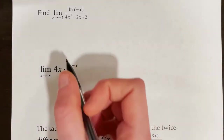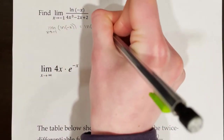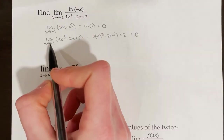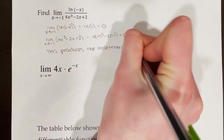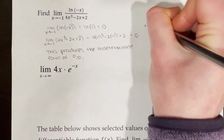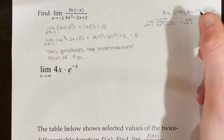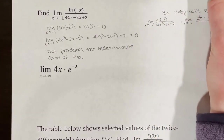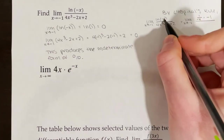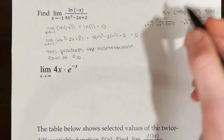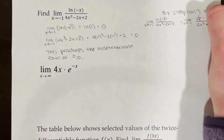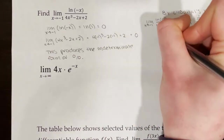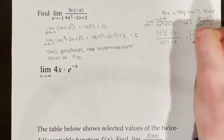Here's another example. Testing the numerator and denominator: ln(1) = 0 and the denominator also equals 0 with direct substitution, producing indeterminate form 0/0. Applying L'Hôpital's rule: the derivative of ln(−x) is (1/(−x))·(−1) by the chain rule. The derivative of the denominator is 12x² − 2. Using direct substitution gives a result of −1/10. That is the actual value of the limit.